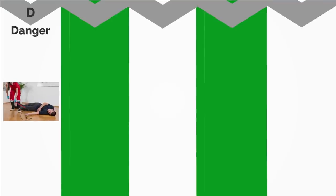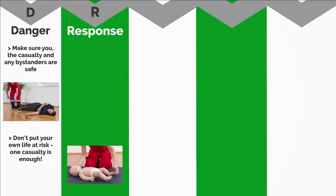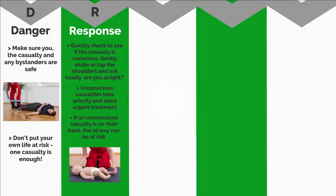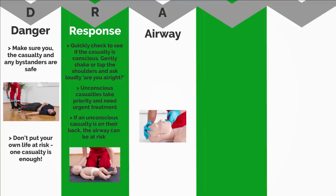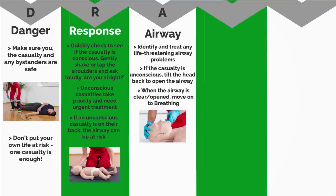D — Danger: make sure you, the casualty and any bystanders are safe. Don't put your own life at risk — one casualty is enough. R — Response: quickly check to see if the casualty is conscious. Gently shake or tap the shoulders and ask loudly, 'Are you alright?' Unconscious casualties take priority and need urgent treatment. If an unconscious casualty is on their back, the airway can be at risk. A — Airway: identify and treat any life-threatening airway problems. If the casualty is unconscious, tilt the head back to open the airway. When the airway is clear and opened, move on to breathing.